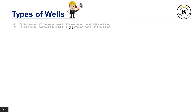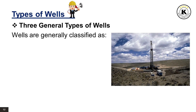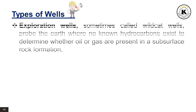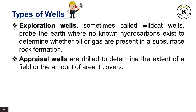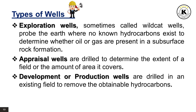Types of Wells: There are three general types of wells. Wells are generally classified as exploration wells, appraisal wells, and development or production wells. Exploration wells, sometimes called wildcat wells, probe the earth where no known hydrocarbons exist to determine whether oil or gas are present in a subsurface rock formation. Appraisal wells are drilled to determine the extent of a field or the amount of area it covers. Development or production wells are drilled in an existing field to remove the obtainable hydrocarbons.